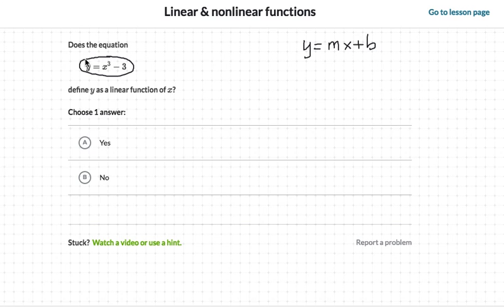So whenever you see an exponent in the equation you're talking about a nonlinear function. If you don't have an exponent in the equation typically you're talking about a linear function. So this here would be a nonlinear function.